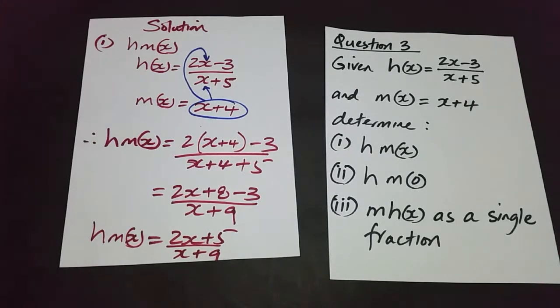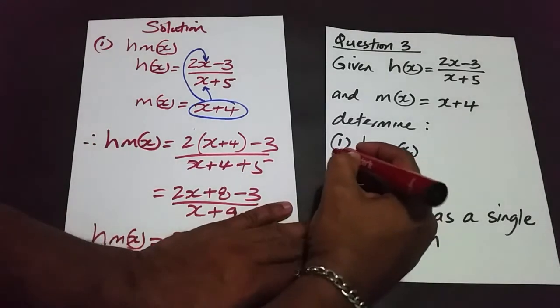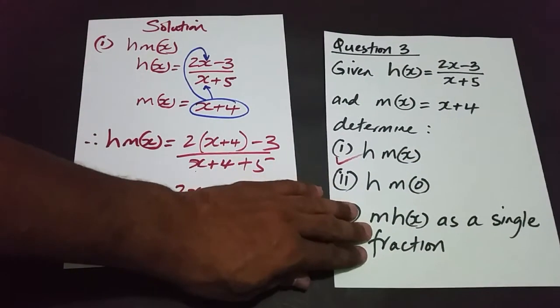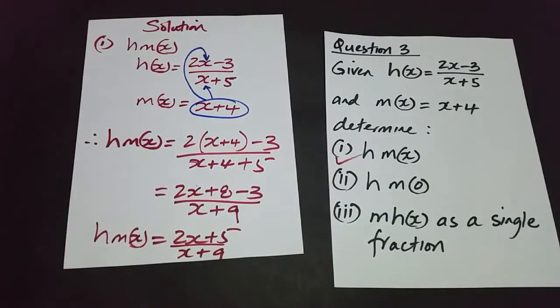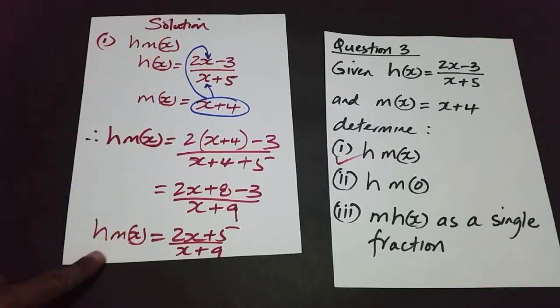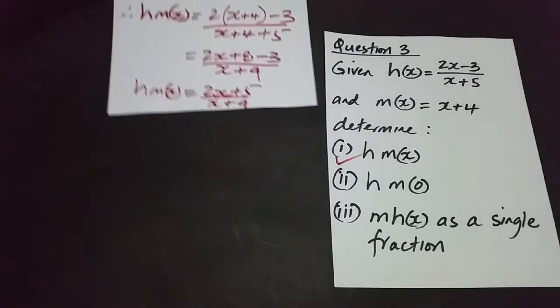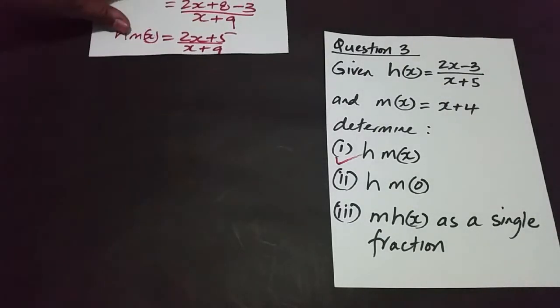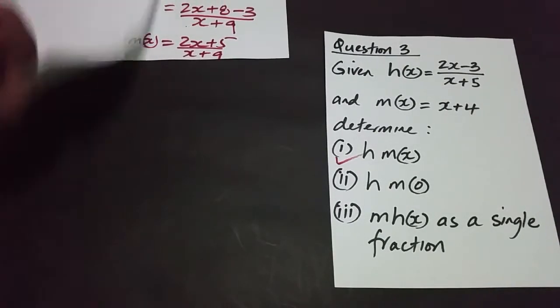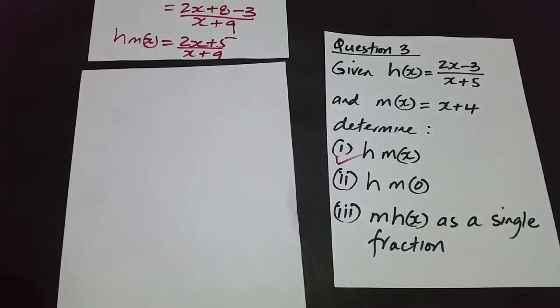Now part two is asking us to determine h of m of 0, and again we're going to utilize h of m of x to find h of m of 0. I'm just going to slide this here where we can still see the function and proceed to answer part two of the question.